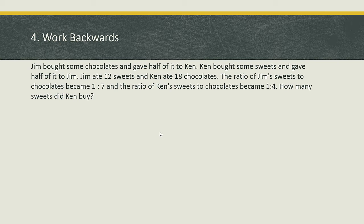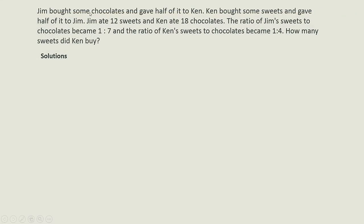The fourth question is from a past PSLE paper and requires you to work backwards. Jim brought some chocolates and gave half of it to Ken. Ken brought some sweets and gave half of it to Jim. Jim ate 12 sweets and Ken ate 18 chocolates. The ratio of Jim's sweets to chocolates became 1 to 7, and the ratio of Ken's sweets to chocolates became 1 to 4. How many sweets did Ken buy?